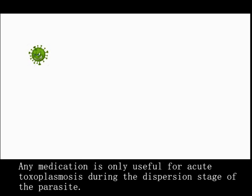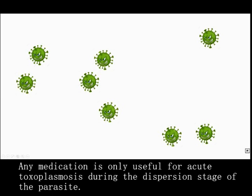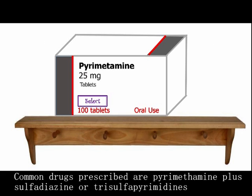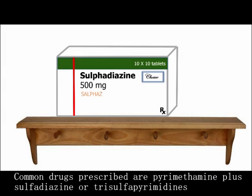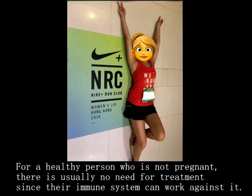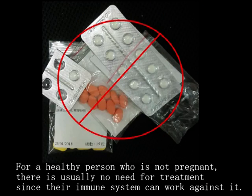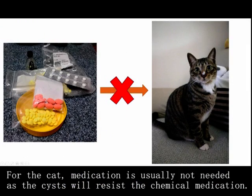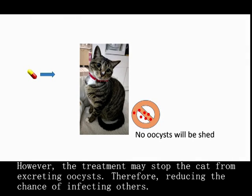Treatment for Toxoplasmosis. Any medication is only useful for acute Toxoplasmosis during the dispersion stage of the parasite. Common drugs prescribed are pyrimethamine plus sulfadiazine, or trimethoprim-sulfamethoxazole. Pregnant women may also use Spiramycin to prevent transmission to the fetus. For a healthy person who is not pregnant, there is usually no need for treatment since their immune system can work against it. If symptoms occur, they usually disappear within weeks to months. For the cat, medication is usually not needed as the cyst will resist chemical medication. However, treatment may stop the cat from excreting oocysts, thereby reducing the chance of infecting others.